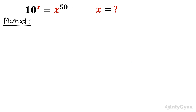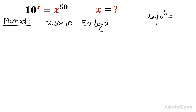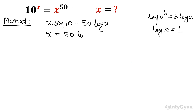Let me start with the logarithmic method, that is method one. Take log both sides, so x log 10 is equal to 50 log x. Because we know log a power b is b log a. Now, log 10 is 1, so the left side becomes x and the right side is 50 log x. Shuffling: x towards the right, 50 towards the left, so the equation becomes 1 over 50 is equal to 1 over x times log x.